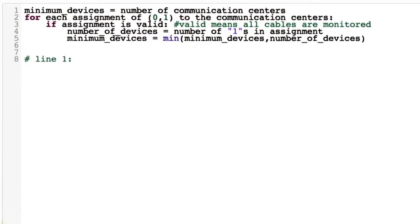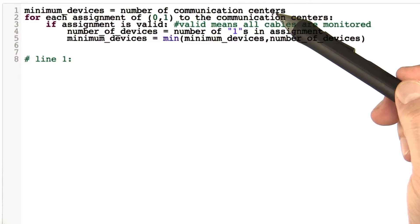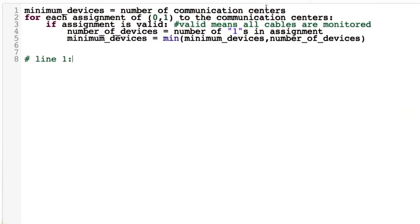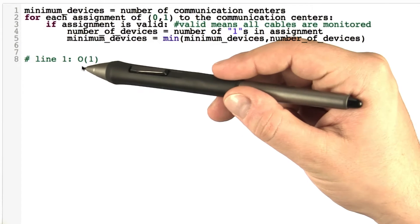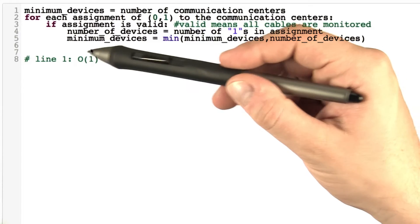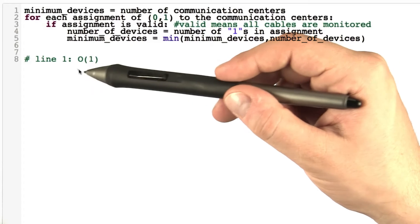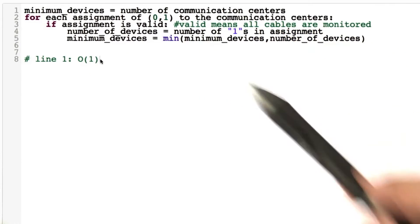So let's start with line one. And line one is just an assignment of a value. So that actually takes zero time steps. But we can also just say that takes O(1) time steps, which just means that it's some constant. Although in this case the constant is zero, but O(1) is a general notation to keep in mind. Any time you want to state that an algorithm runs in constant time, you can just write O(1).